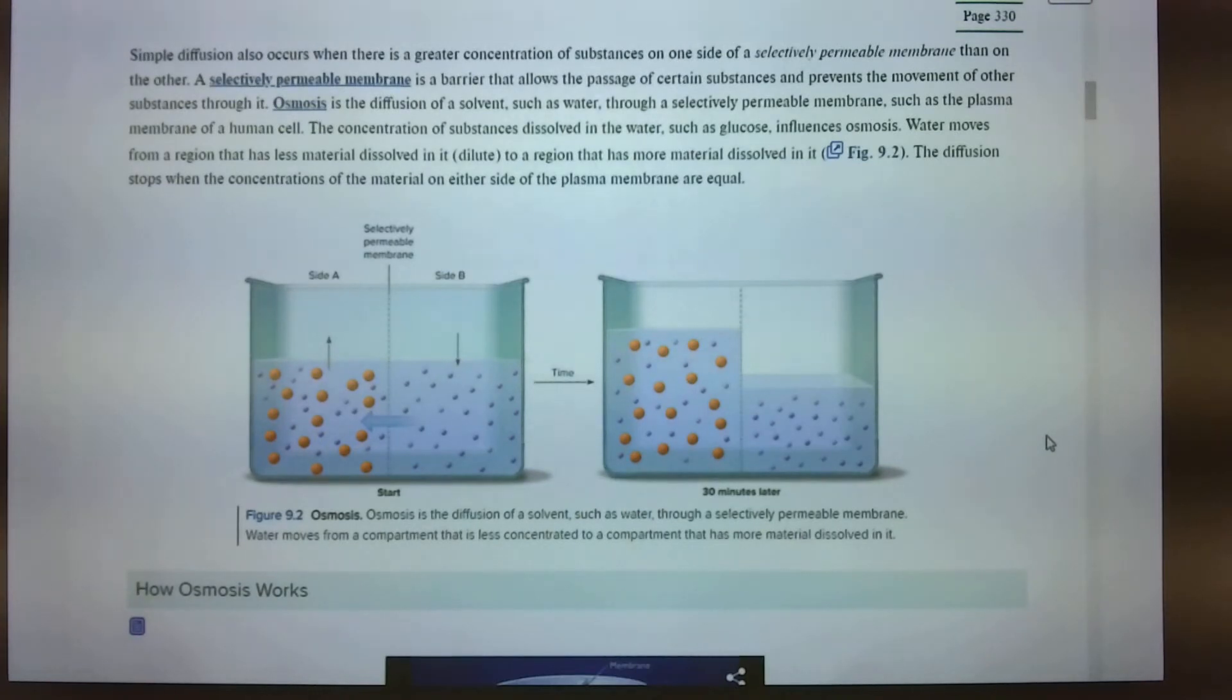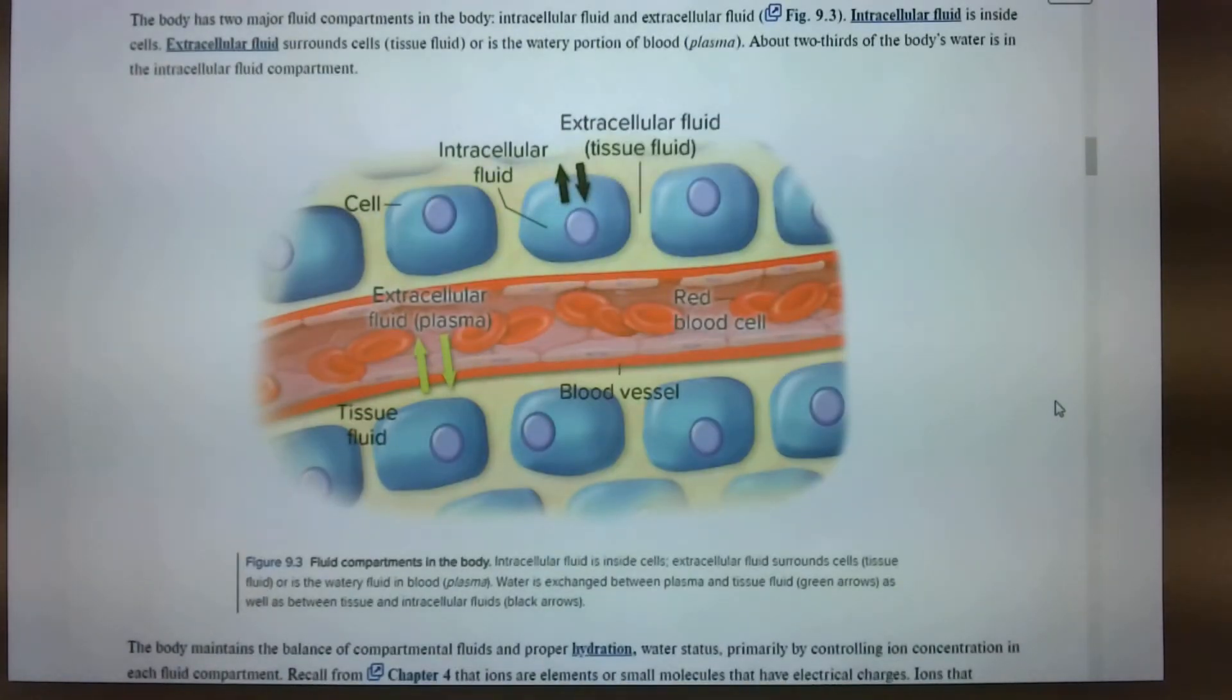Selectively permeable membrane. Osmosis is a barrier that allows a passage of certain substances. Osmosis is the diffusion of solvent. Okay. It moves through the cell, that permeable membrane. Osmosis, so selectively permeable membrane, know that. Osmosis. Bodily fluids. The body has two major fluid compartments in the body, intracellular and extracellular. Okay. Intracellular is inside the fluid. Intracellular is inside the cells. Extracellular is outside. Exit. Outside. They make those combinations.